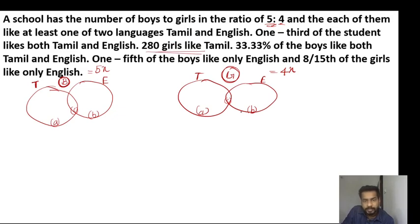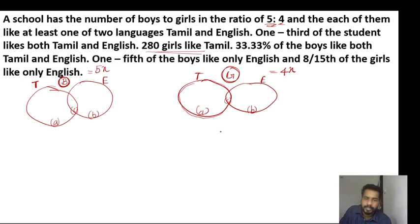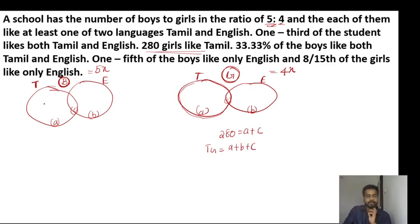So girls in Tamil — what is it? A plus C. E in Tamil: A part is Tamil only, and C part is Tamil and English both. So A plus C equals 280 girls. And girls total — what is it? A plus B plus C. A and B and C is also total. That's the total.